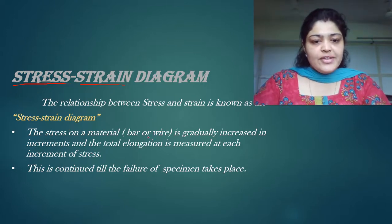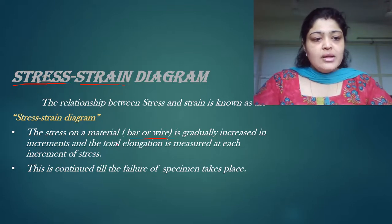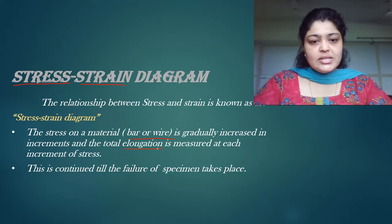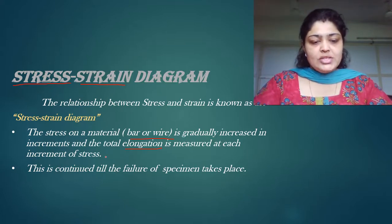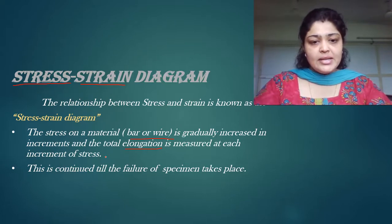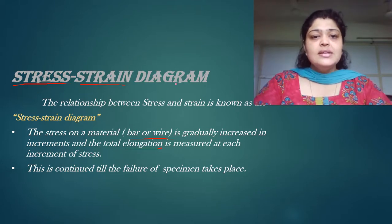The stress on a material — here we consider either a bar or a wire — is gradually increased. Per unit area, you keep on increasing the force in gradual intervals, and the total elongation, which can be a change in shape, change in length, or change in area, is measured at each and every increment of stress. For example, the force is changed by 10 Newtons and the elongation is measured, then increased by 10 Newtons again. This is how we study the stress-strain diagram.